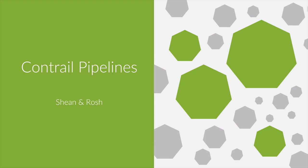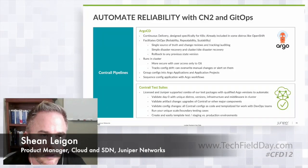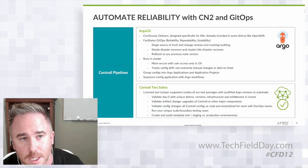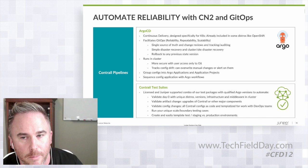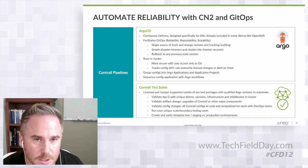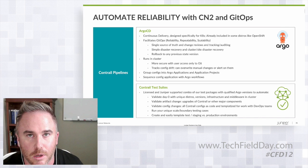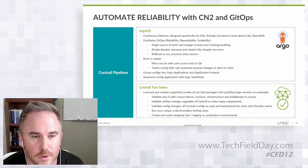Contrail pipelines is really our GitOps mechanism and the GitOps approach that we're bringing into Contrail for your Kubernetes environment. The whole idea behind this is being able to automate some of the reliability for Contrail, and this is based off an Argo CD workflow. For those familiar with Argo, it's designed specifically for Kubernetes, and it's already included in some other distros such as OpenShift.